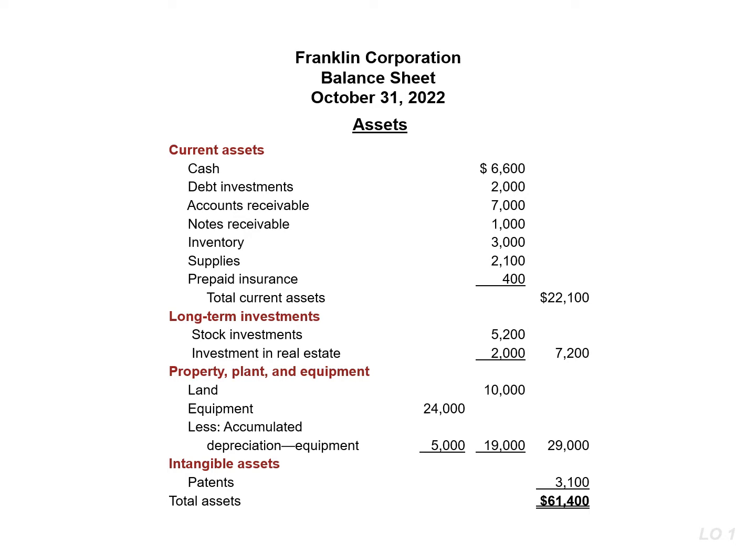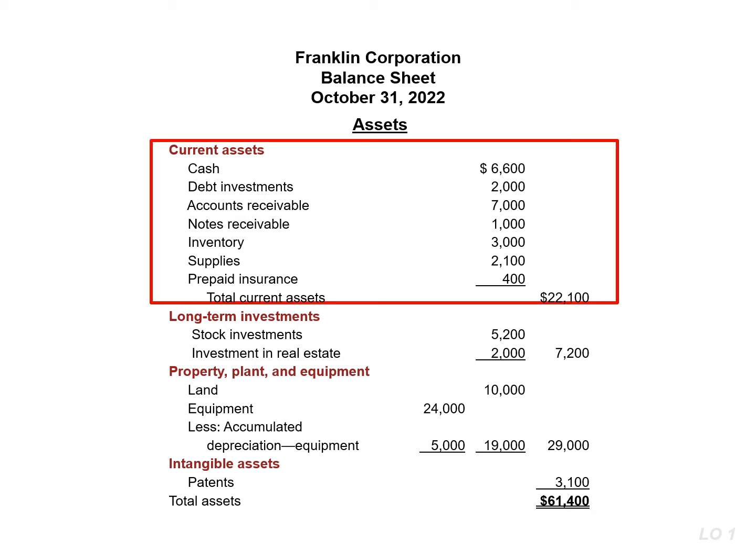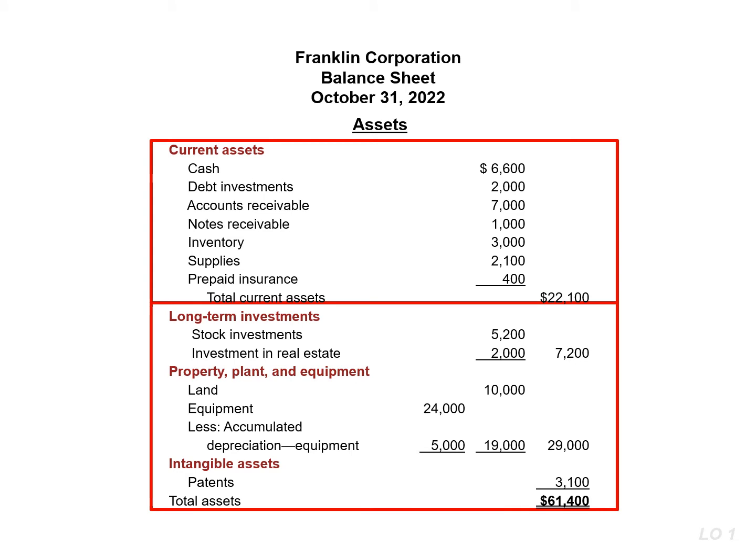Let's look at Franklin's balance sheet. In a classified balance sheet, assets are classified as either current or long-term. Current assets are those accounts we expect to convert to cash or use up within the year. Long-term assets are those assets that extend beyond a year, and would include long-term investments, property, plant, and equipment, and intangible assets. We'll talk about each of these classifications in detail in subsequent slides.